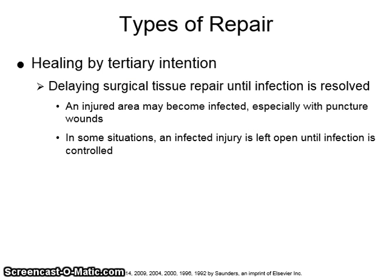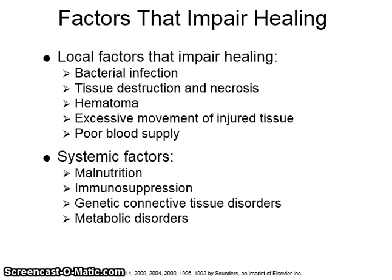If infection occurs at the site of a surgical incision that is healing by primary intention, healing by tertiary intention may result. This transformation occurs because of an enlargement of the injured area and an increase in the magnitude and duration of the inflammatory and immune responses triggered by the presence of pathogenic microorganisms. In some cases, an infected injury is left open and the edges are not surgically joined until the infection is controlled. Local factors that can impair healing include bacterial infection, tissue destruction and necrosis, hematoma, excessive movement of the injured tissue, and poor blood supply. Systemic factors that impair healing include malnutrition, immunosuppression, genetic connective tissue disorders, and metabolic disorders.